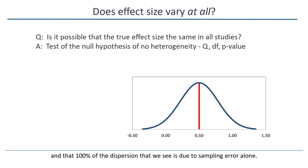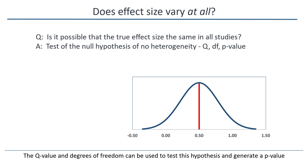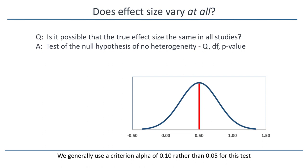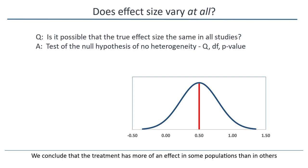The Q value and degrees of freedom can be used to test this hypothesis and generate a p-value. We generally use a criterion alpha of 0.1 rather than 0.05 for this test. In this case, the p-value is 0.017. We reject the null hypothesis that the true effect size is the same in all studies. We conclude that the treatment has more of an effect in some populations than in others.